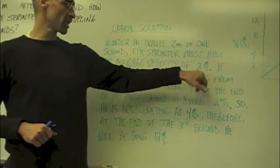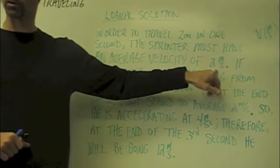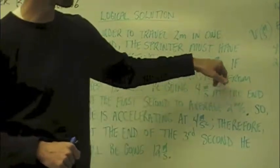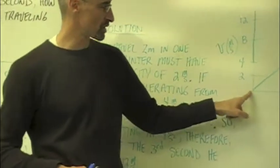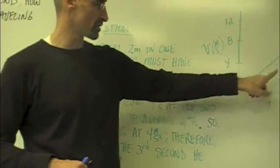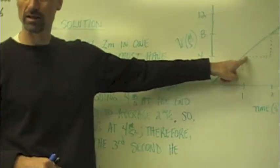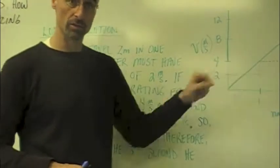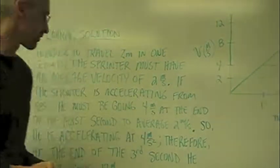But if you're accelerating, he wasn't going two meters per second the whole time—he averaged two. So to get an average of two starting from zero, how fast are you going at the end of that first second? You have to be going four, because then your average would be two.